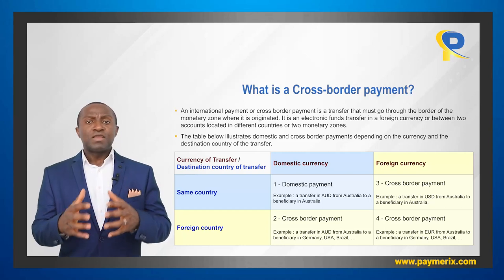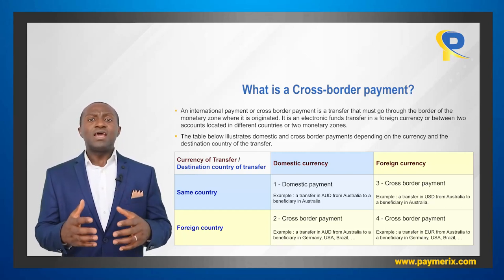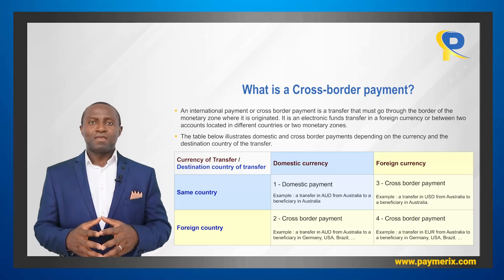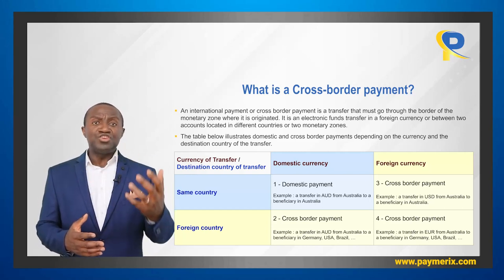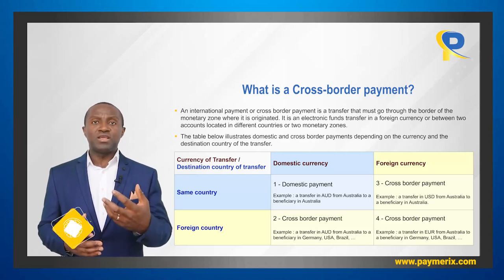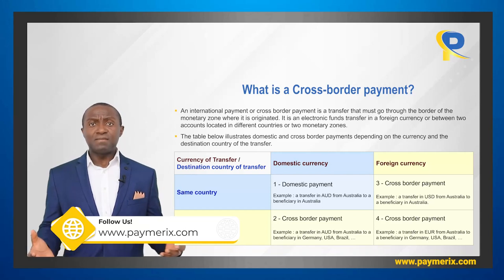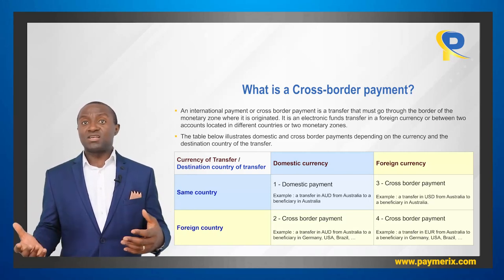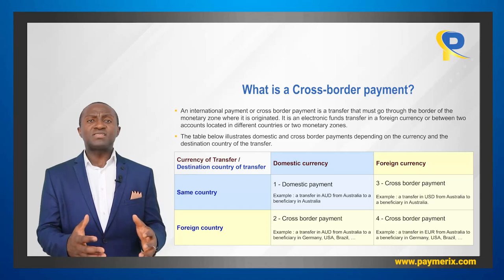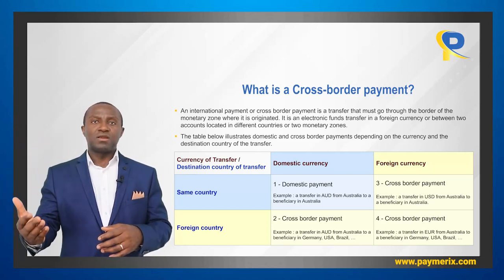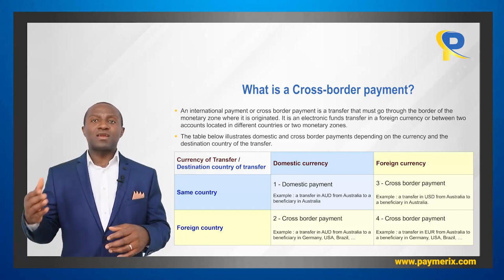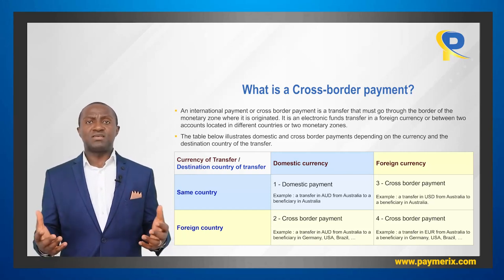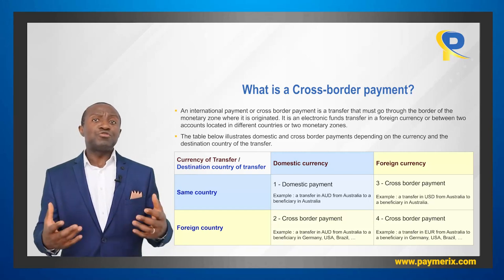As you see in quadrant two, if the currency of transfer is the national currency and the destination country of transfer is a foreign country, then it is a cross-border payment. With country we refer to a monetary union or monetary zone like the SEPA area, not only a geographical country. An example is a transfer in Australian dollar from Australia to a beneficiary in Germany, USA or Brazil. Even if it is the local currency, the beneficiary is outside the country and the payment must cross the border and credit an account in a foreign country. The account located in the foreign country can be in any currency — Australian dollar, Canadian dollar or Euro. It does not matter.